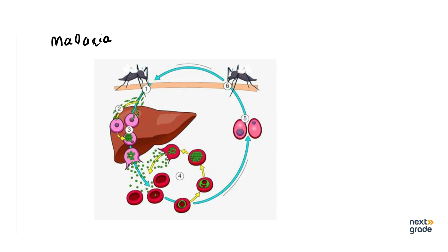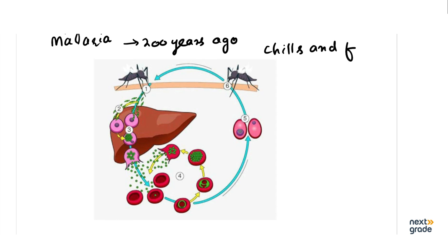جتنی بھی diseases ہیں، ایسا نہیں ہوتا کہ وہ disease ختم ہو جائے، لیکن اب اس کا cure، اس کا treatment possible ہے۔ اگر ہم malaria کی example کی study کریں — about 200 years ago — ہمارے جو physician تھے، وہ جانتے تھے کہ malaria کیا ہے، لیکن وہ صرف اتنا جانتے تھے کہ malaria میں کیا ہوتا ہے، اس کی وجہ کیا ہے یہ نہیں جانتے تھے۔ Malaria is a disease of chills and fever — یعنی بار بار بخار ہونا۔ اس وقت اس کا نام malaria بھی نہیں تھا، doctors کو صرف یہ پتا تھا کہ بخار ہوتا ہے، سردی لگتی ہے۔